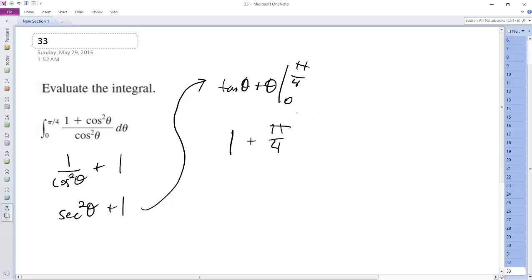And then for 0, tangent of 0 is equal to 0 plus 0. So we just end up with 1 plus pi over 4.